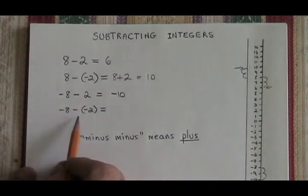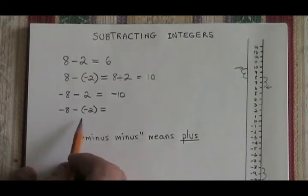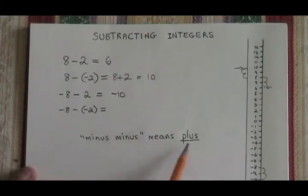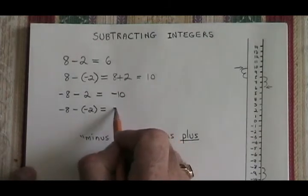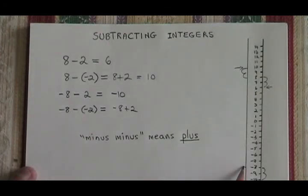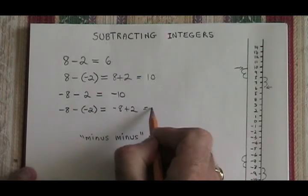And the fourth one, negative 8 minus negative 2. It has negative signs all over the place. But we apply our rule. Minus minus means plus. This can be written as negative 8 plus 2. And on our thermometer, from negative 8, we go up by 2 and our answer is negative 6.